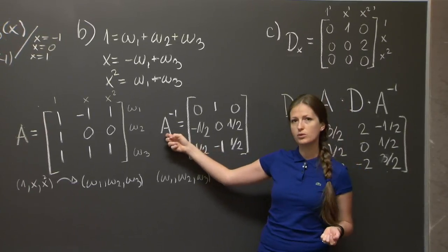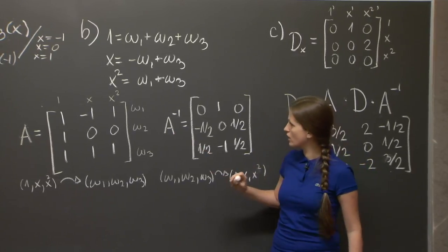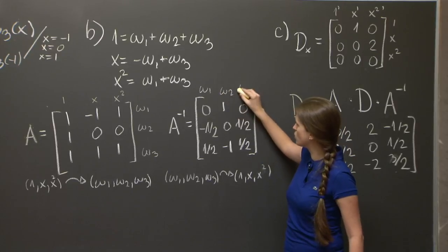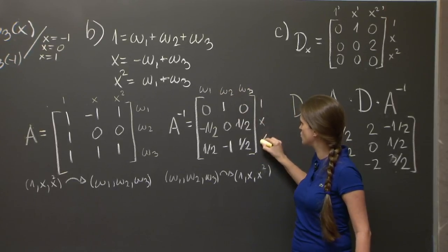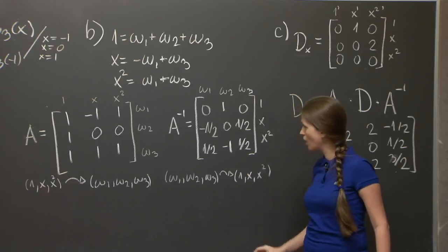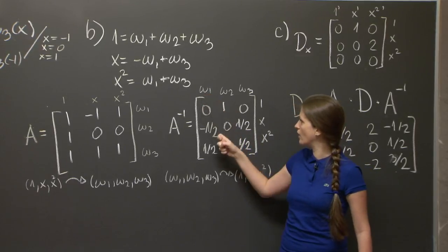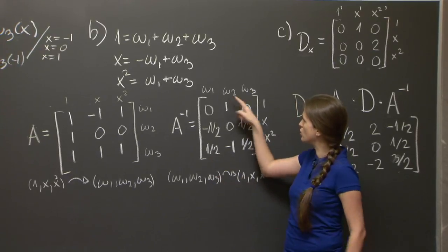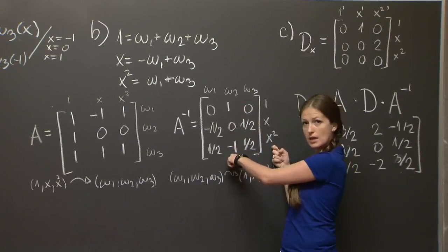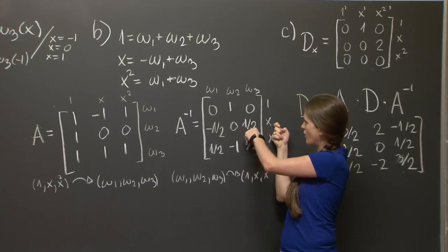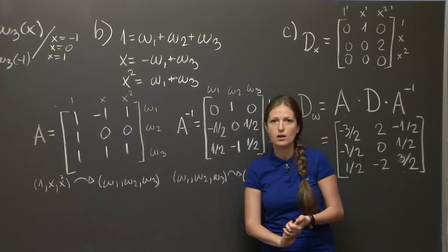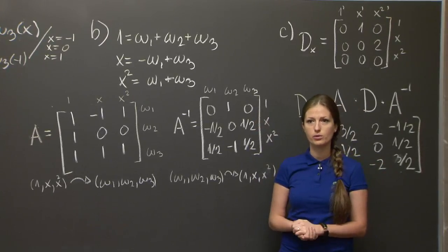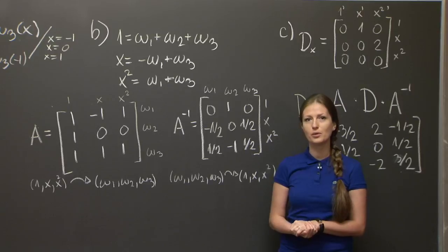We calculated the matrix of A inverse here. And what this really means is that w1, w2, and w3, written in the basis 1, x, and x squared are as follows. w1 is -1/2*x + 1/2*x squared. w2 is 1 - x squared. And w3 is 1/2*x + 1/2*x squared. So you can check your work with the help of this matrix, in case you did find w1, w2, and w3 explicitly. And that's all I wanted to say today.